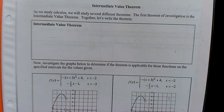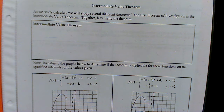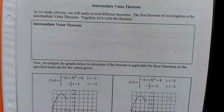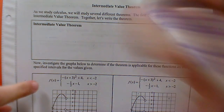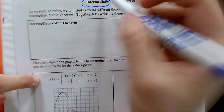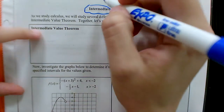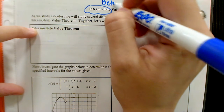So we're going to write down what the Intermediate Value Theorem is, draw a little picture to help it make sense, and then go through some examples. Do we even know what the word 'intermediate' means? It means in between — between two values.